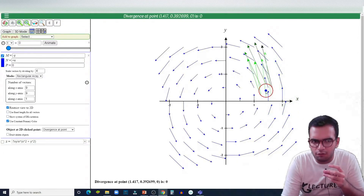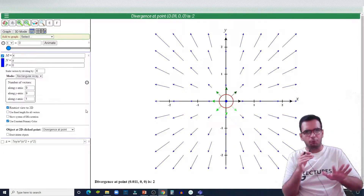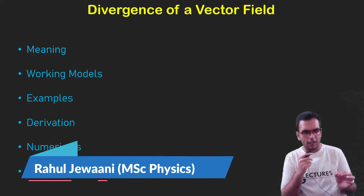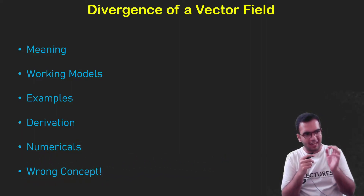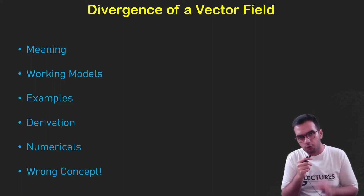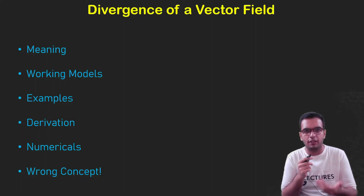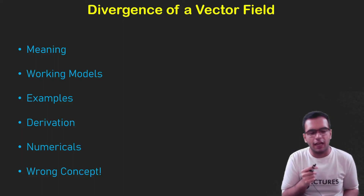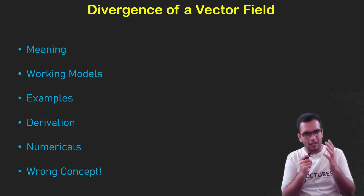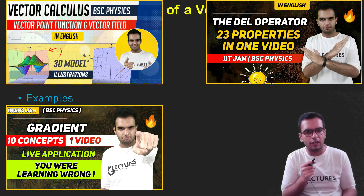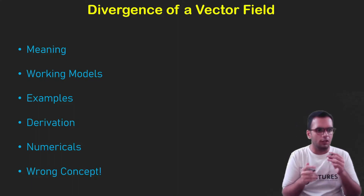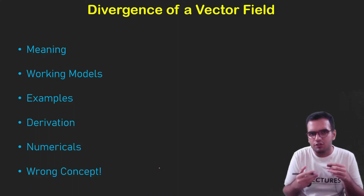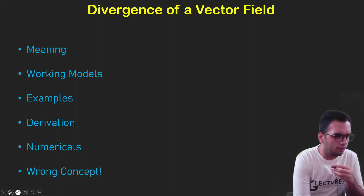These lines are representing the flow here. Can you see the field spreading out? In this video we are going to cover the concept of divergence, but this video is not traditional — every example, every equation will be explained by means of a working model. This is part of a whole playlist on vector calculus from the perspective of a physicist, meaning everything contains working 3D models. So let's start: what is the divergence of a vector field?